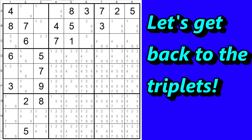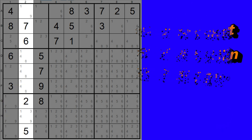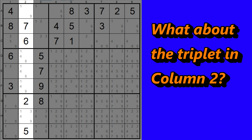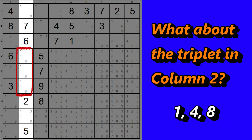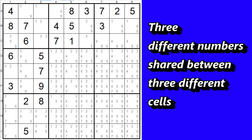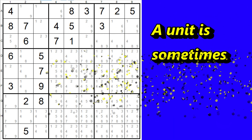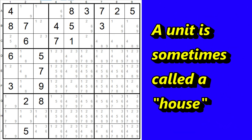Now let's get back to the triplets and how we can use them. Do you see the triplets in column one? It's the one, seven, and nine. There is also a triplet in column two — the one, four, and eight. A triplet is when three different numbers in a unit are shared between three different cells. If you find a triplet, you can then eliminate all the numbers from anywhere else they appear in the same unit. Remember, a unit is either a row, column, or block.